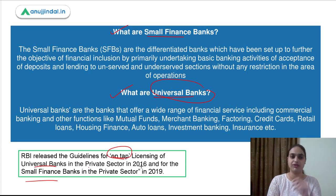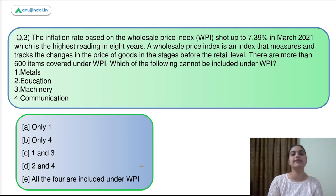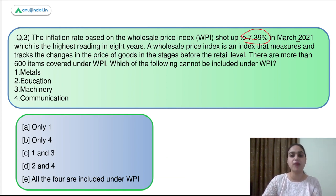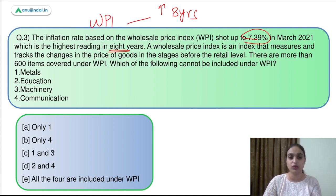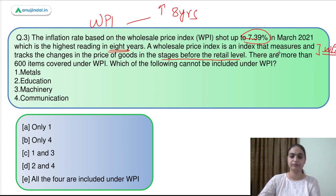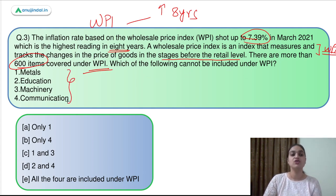Now let's move on to question number 3. This question says that the inflation rate based on the Wholesale Price Index shot up to 7.39% in March 2021, which is the highest reading in 8 years — so WPI reached its peak point in the past 8 years. A Wholesale Price Index is an index that measures and tracks the change in prices of goods in the stages before the retail level. There are more than 600 items covered under WPI. Which of the following cannot be included under WPI?